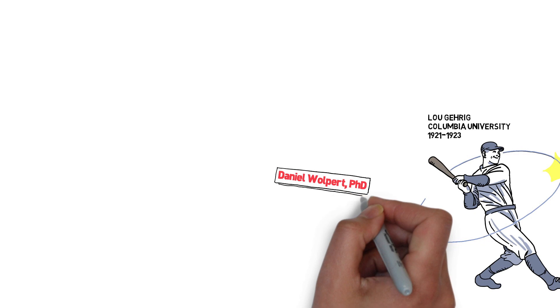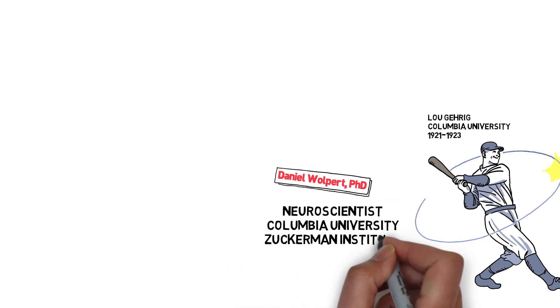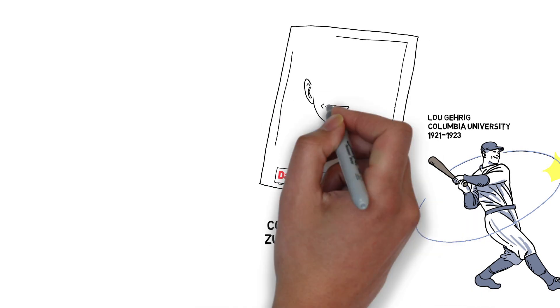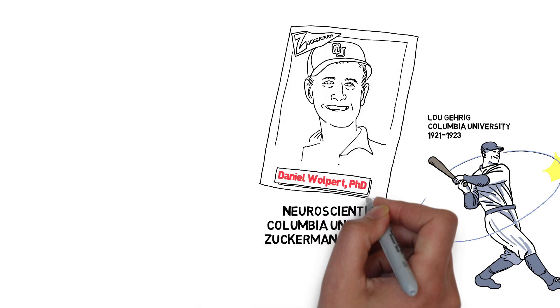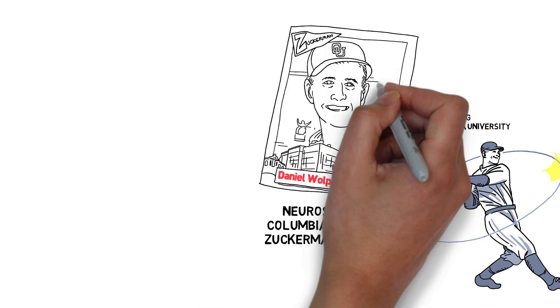Daniel Wolpert, a neuroscientist at Columbia's Zuckerman Institute, is uncovering the connections between body and brain that make such physical feats possible.